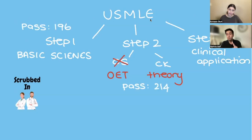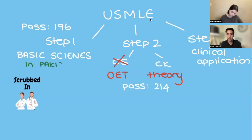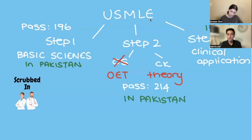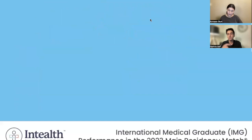An important point about Step 3 is that while Step 1 and Step 2 can be given in Pakistan, Step 3 is an exam you have to take at a special location — you have to go there in person, as you are proving you are ready to work in the USA. Regarding timing, Step 1 is typically given in 4th year or the beginning of final year, and Step 2 is given in 5th year or the beginning of that year.